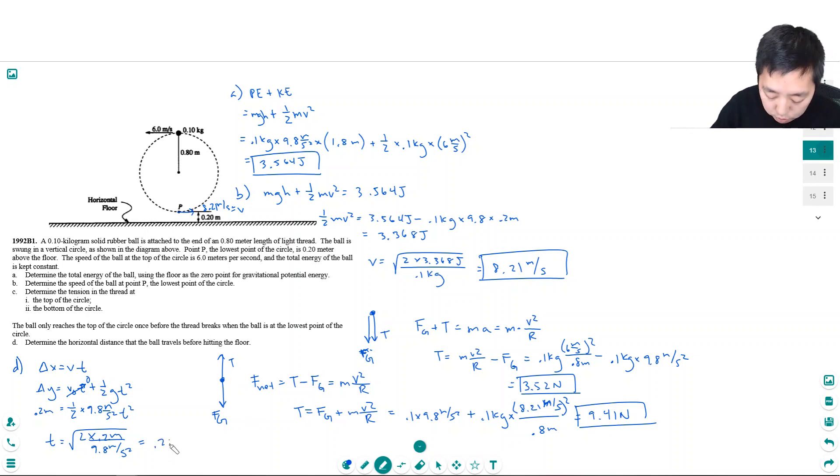And so then delta x is its velocity which was 8.21 meters per second times 0.202 seconds. 1.65 meters. Okay so the last part was a kinematic projectile motion question. So hope you found it helpful. I will see you guys in the next video.